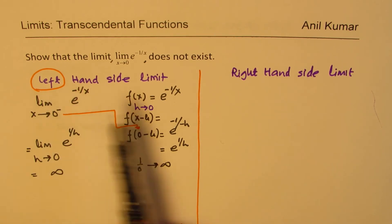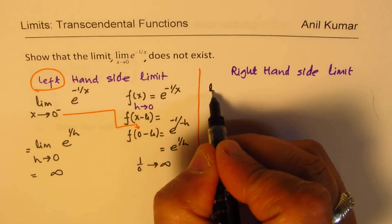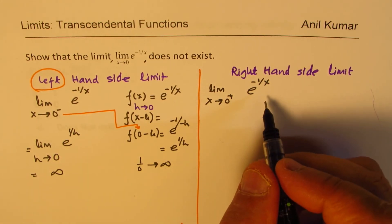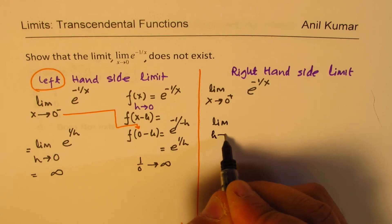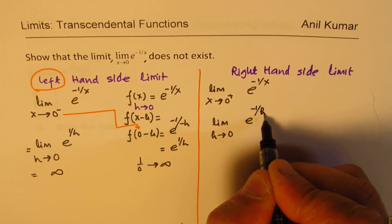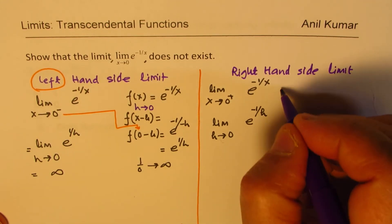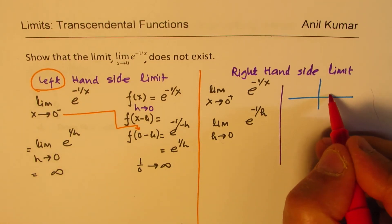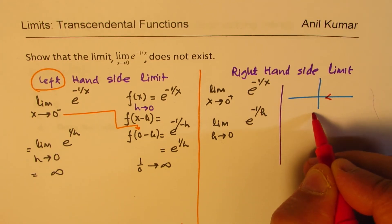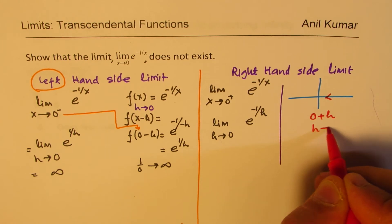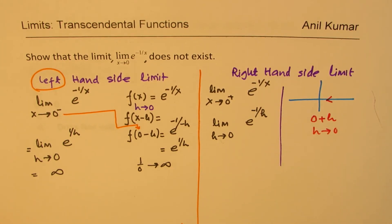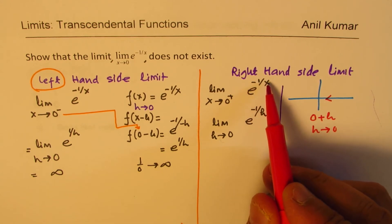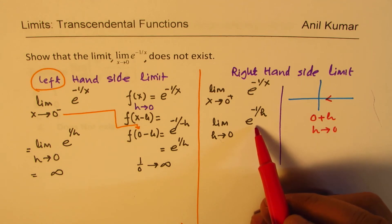We will now apply this method to look at the right-hand side of the limit. On the right-hand side, we have limit x approaches 0 from the right of e to the power of minus 1 over x. That means we could write this as limit h approaches 0 of e to the power of minus 1 over h, because we are approaching from the right — meaning x equals 0 plus h, where h is approaching 0.